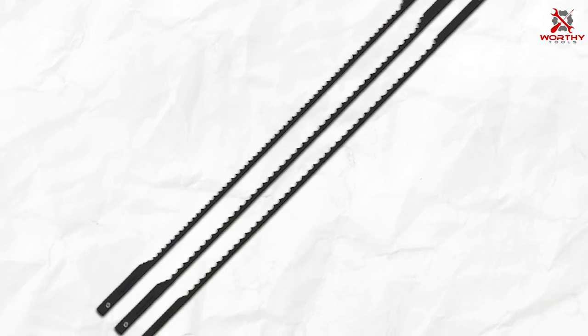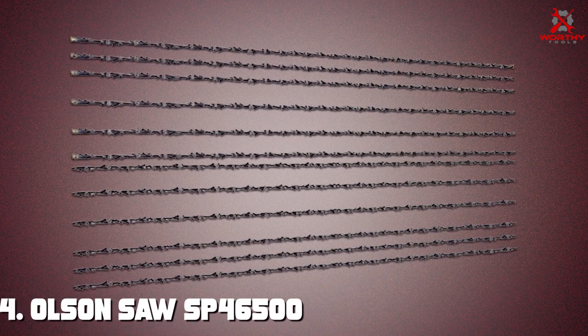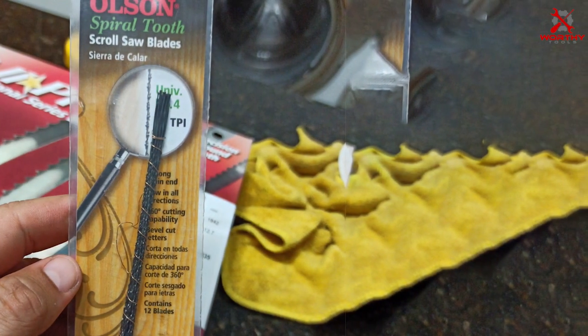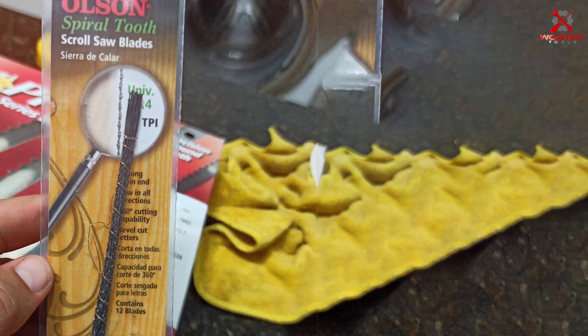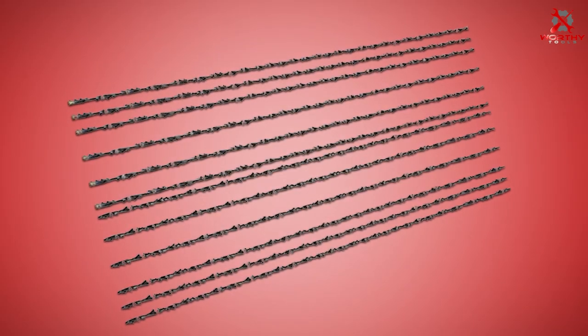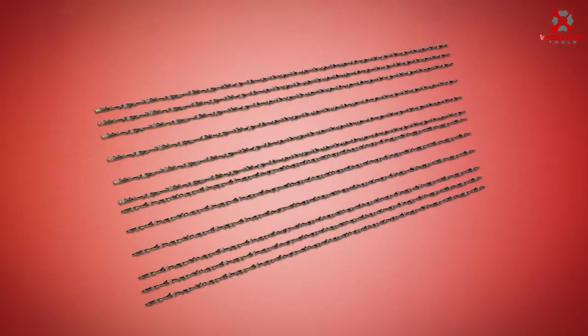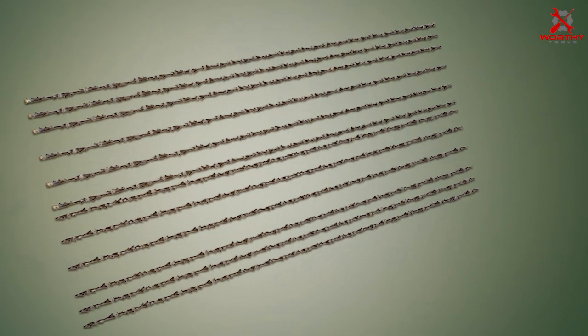Number four: Olsen Saw SP46500 Spiral Scroll Saw Blade. The Olsen Saw SP46500 spiral scroll saw blade represents a leap forward in woodworking technology, offering unparalleled flexibility and precision. The spiral design is a game changer for woodworkers, allowing for cutting in any direction without the need to reposition the workpiece. This capability is invaluable for creating intricate and complex patterns, expanding the creative possibilities of scroll saw projects.